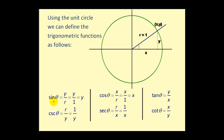On the unit circle, sine theta equals y over r, which is y over 1, so sine theta simply equals y. Similarly, cosine theta equals x. Tangent theta is still y over x. For the reciprocal functions: cosecant theta equals 1 over y, secant theta equals 1 over x, and cotangent theta equals x over y.